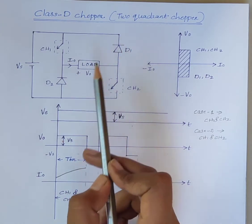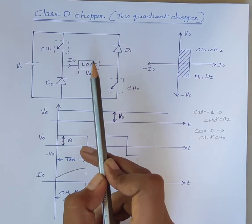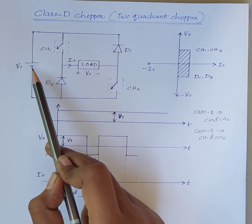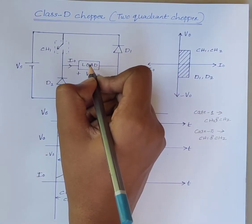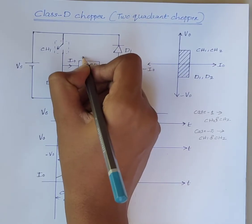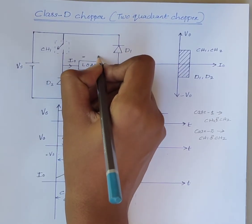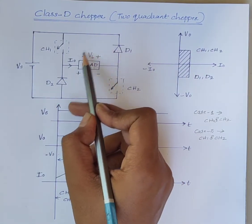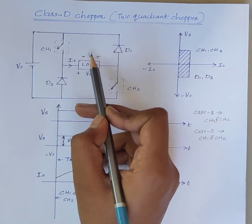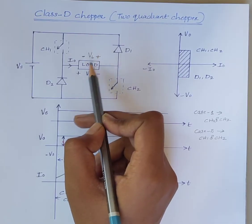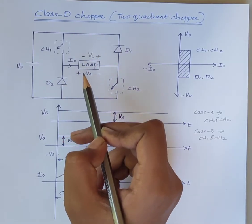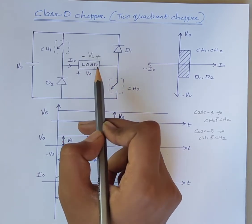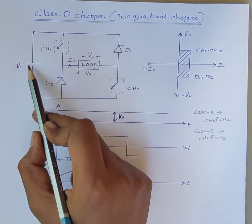Thus, D1 and D2 start conducting and connect the load to the source. The induced voltage in the inductor is negative here and positive VL here. Due to the presence of induced voltage VL, diodes D1 and D2 are forward biased and current flows from load to the source.